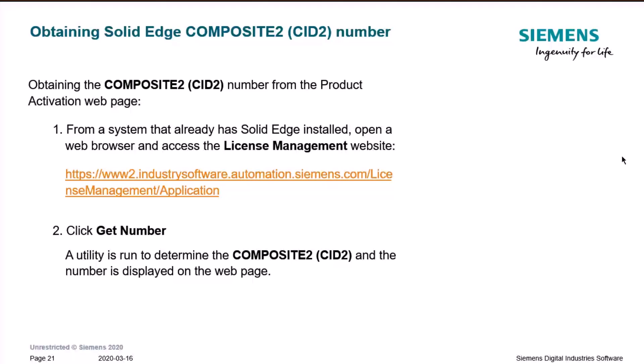The second method is to get the number from the product activation web page. From a system that already has Solid Edge installed, open a web browser and access the license management website — the link is shown on screen. Click Get Number, and the utility will run to determine the Composite 2 value, which is then displayed on the web page.